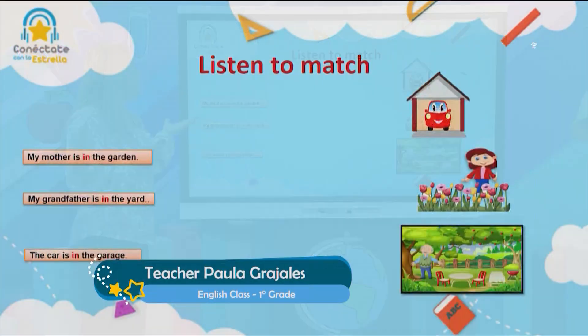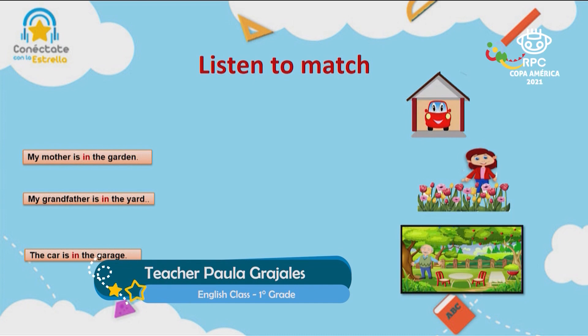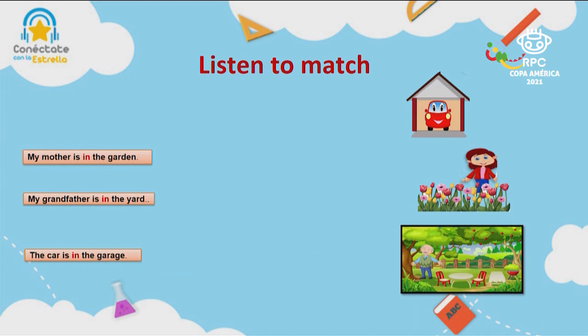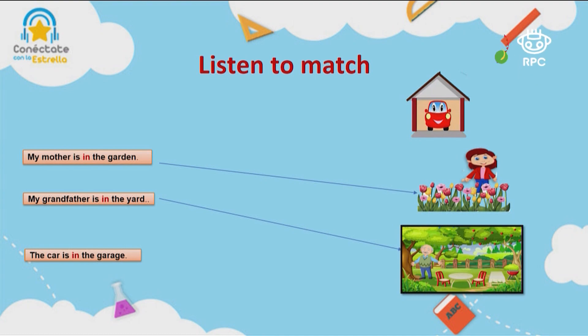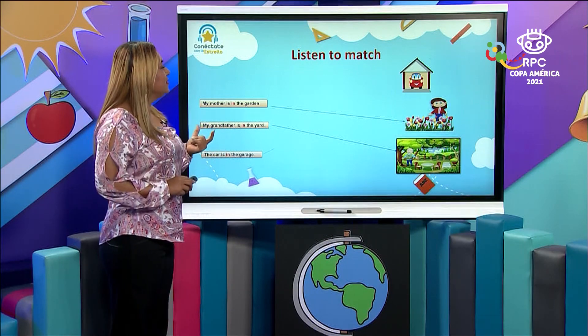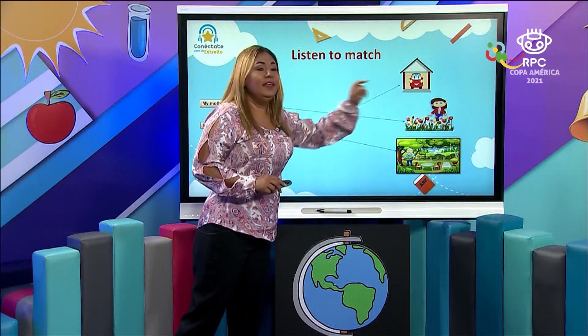So let's listen to match. You have to match what you listen with the picture. My mother is in the garden — picture number two. So this is my mother and she is in the garden. My grandfather is in the yard. There is the grandfather and he is in the yard. And at the end, the car is in the garage. There is the car — the car is in the garage.